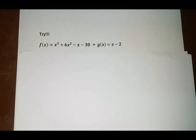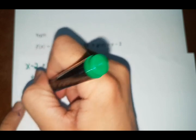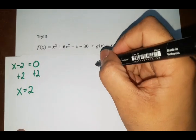Okay. So let's answer. So the first step again, equate x minus 2 to 0. So add 2 both sides, so x is equal to 2. And we are going to use 2 again for our synthetic division. So 2.